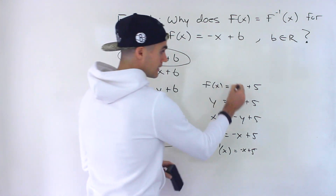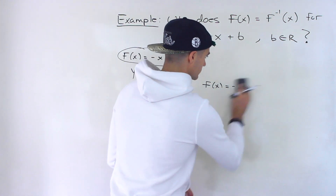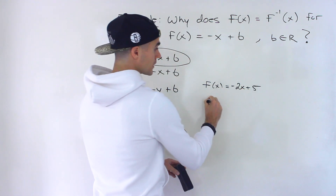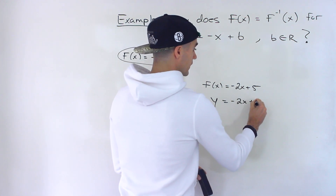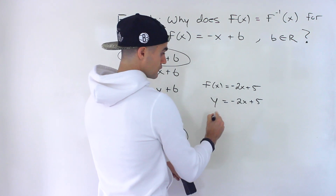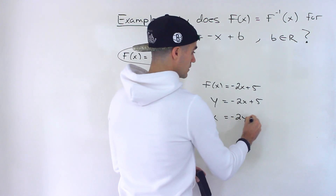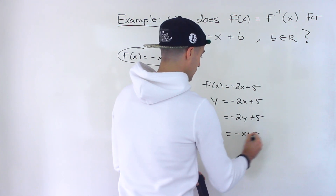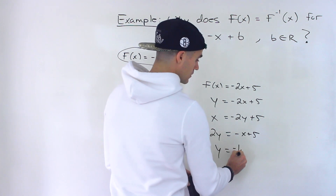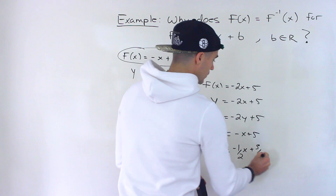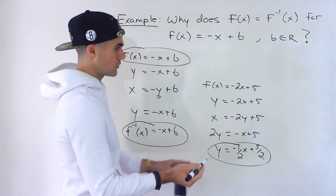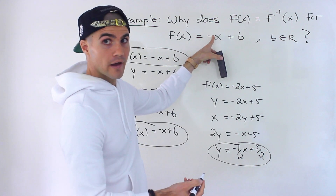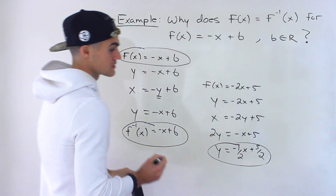Now it has to be that specific slope. There can't be any other slope — you can't have something like negative 2x plus five. Then it's not going to work, because notice we'd have y equals negative 2x plus five. When we interchange and run the same process, we get 2y equals negative x plus five, and then we divide both sides by two. Notice that would be the inverse and we'd end up with a completely different line. So the slope has to be negative one in order for this to hold.